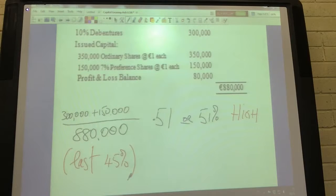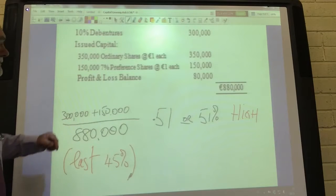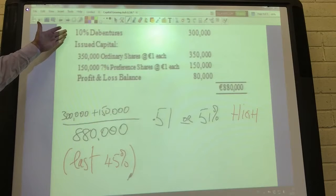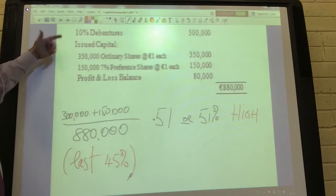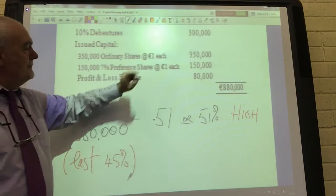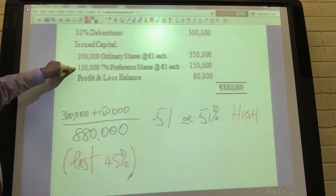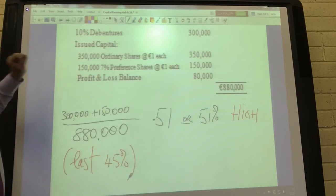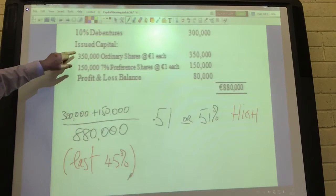A higher proportion of the company's capital employed is coming from fixed return capital and that can put the company under certain pressures. They're at greater risk from outsiders. We owe the banks or the debenture holders 300,000. They're not the owners of the company, neither are the preference shareholders. Although the preference share capital is long term, the preference shareholders aren't the owners of the company. The owners are the ordinary shareholders.